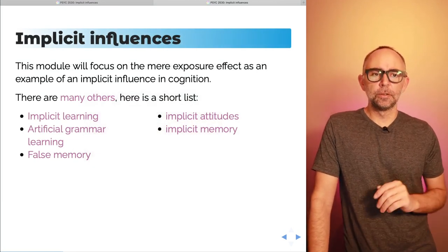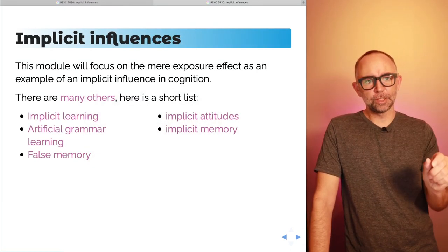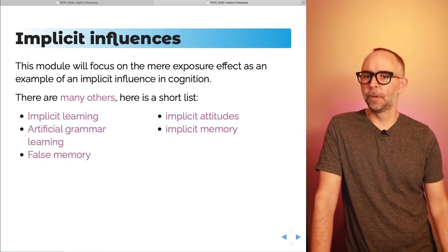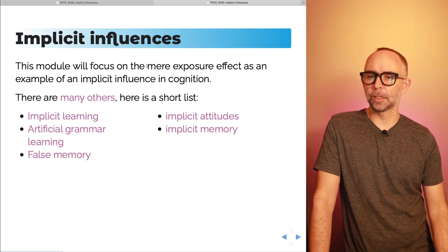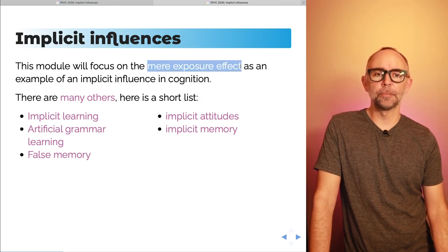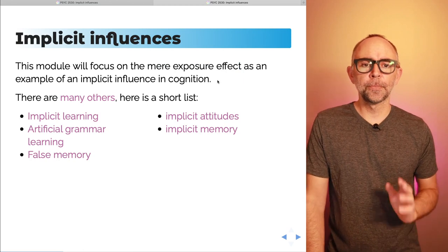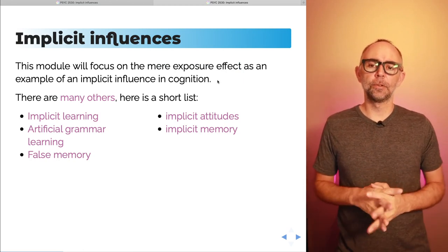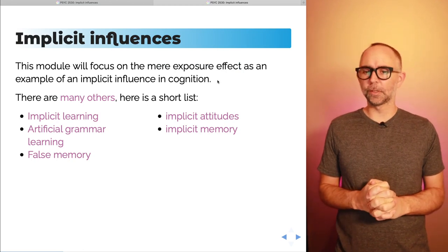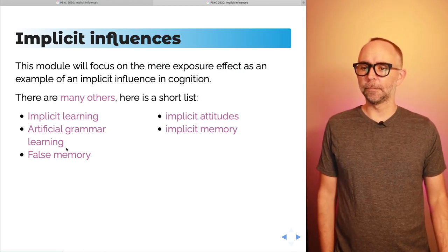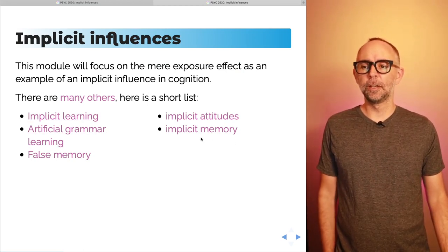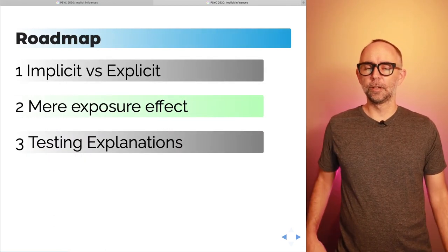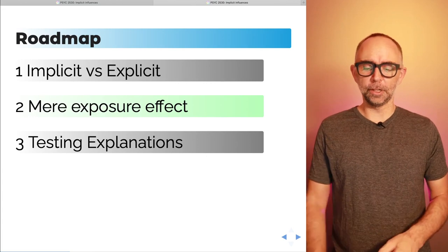We're about to jump into a thin strip of research into implicit influences, focusing on the Mere Exposure Effect as an example. There are lots of examples of implicit influences in cognition, and I've listed some here — you can click those links to check them out. Let's get into the Mere Exposure Effect.